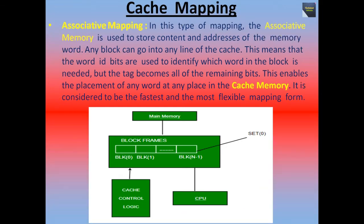Now we talk about associative mapping. In this type of mapping, associative memory is used to store content and addresses of the memory word. Any block can go into any line of the cache. The word ID bits identify which word in the block is needed, but the tag becomes all of the remaining bits. This enables placement of any word at any place in the cache memory, and it is considered the fastest and most flexible mapping form.